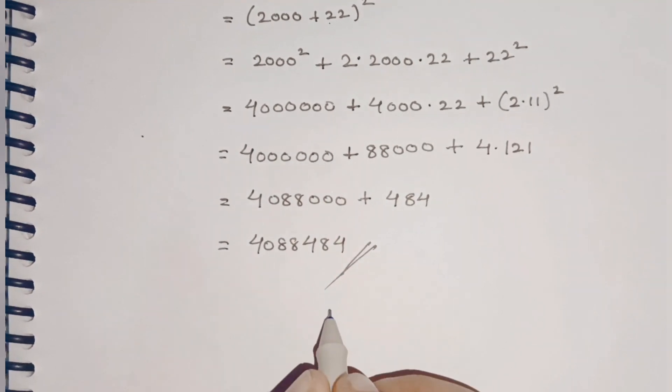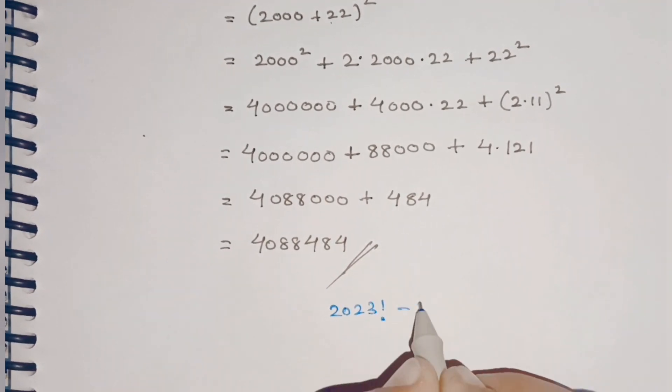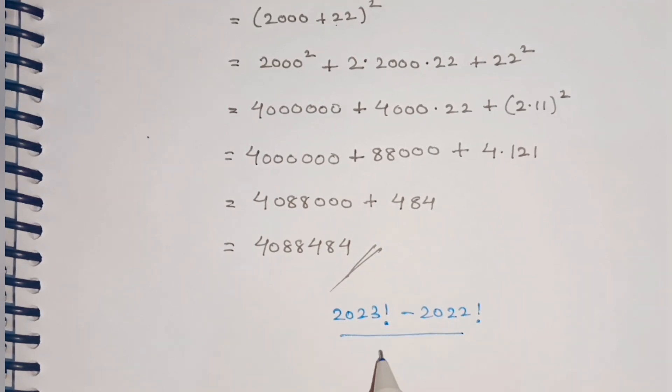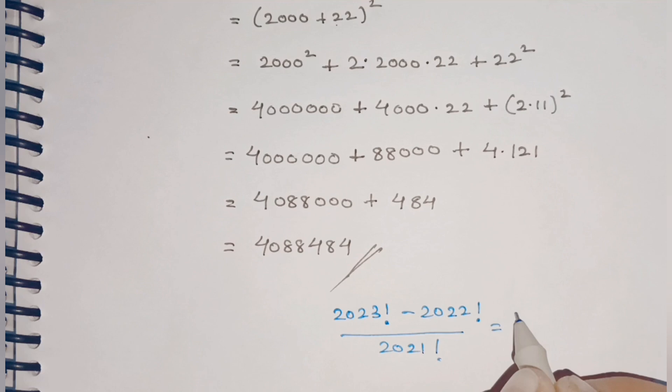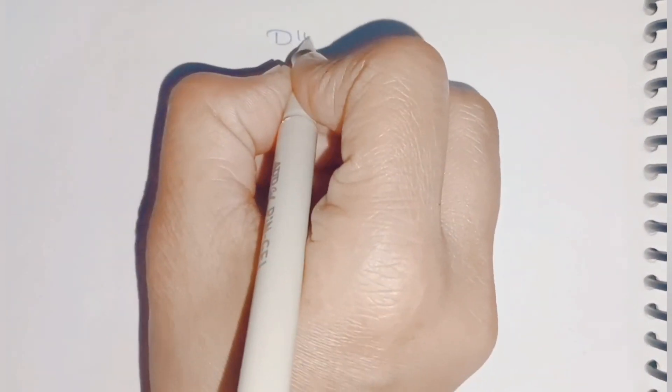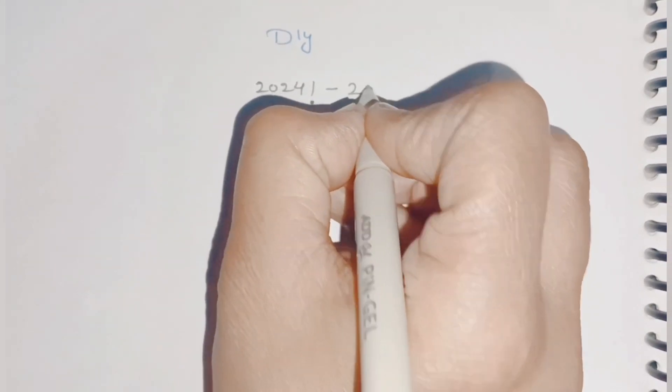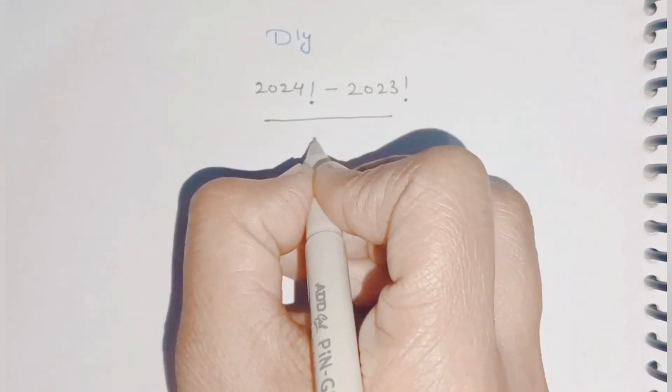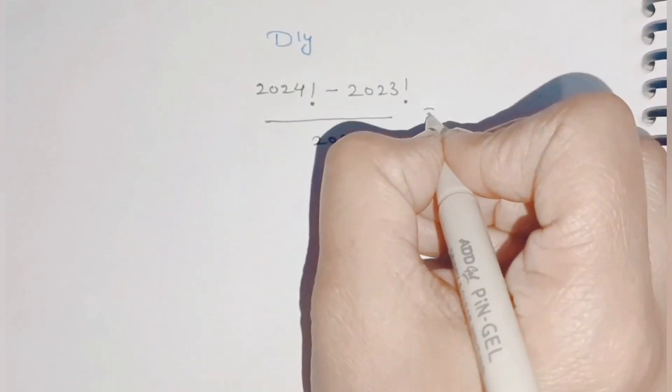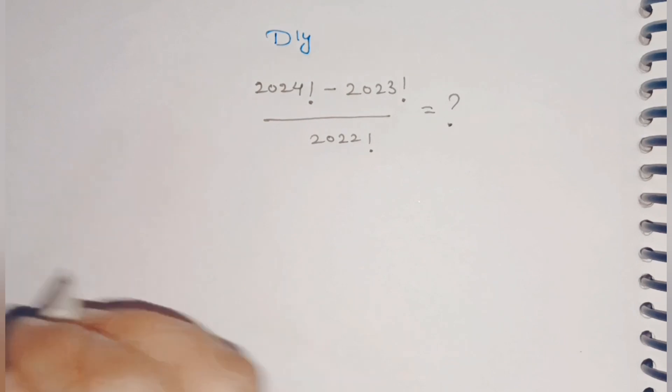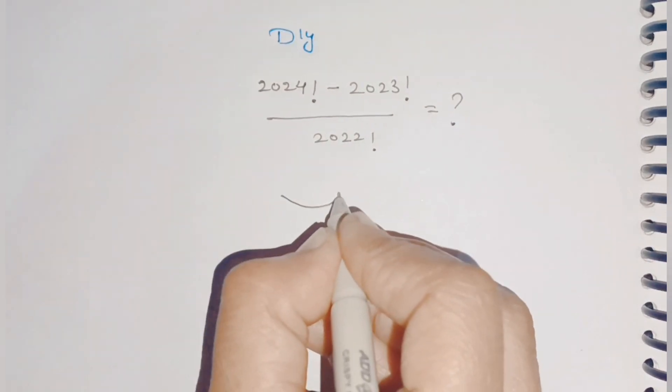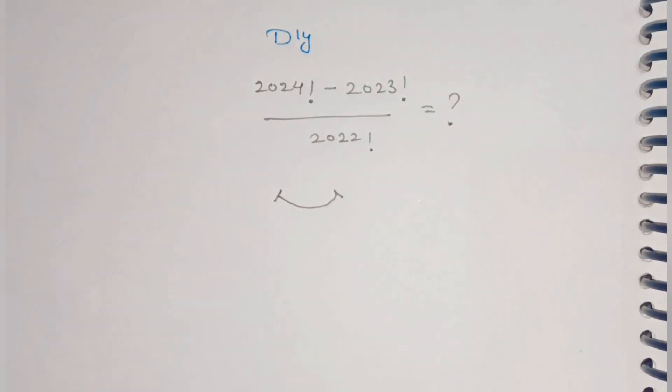If you have an alternate solution or easier method, please comment below. The final answer is 4,088,484. I have a DIY homework problem for practice: calculate (2024! - 2023!) / 2022!. Repeat the similar steps and comment your answer below. Hope you liked my explanation. Like, share, and subscribe to my channel. Thank you!